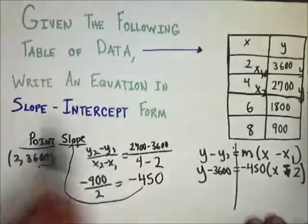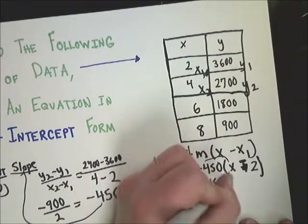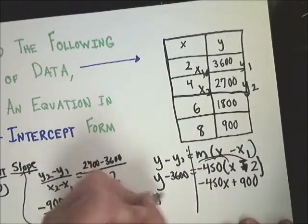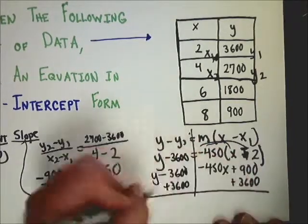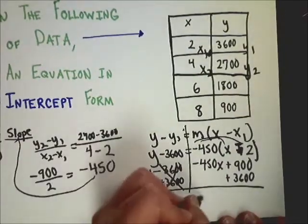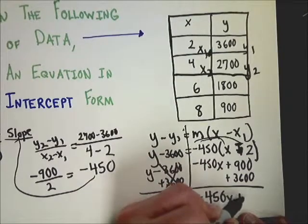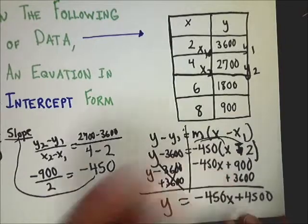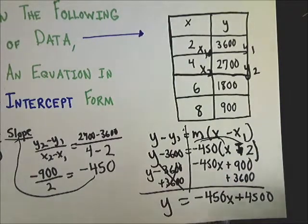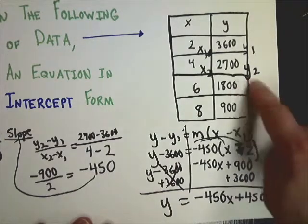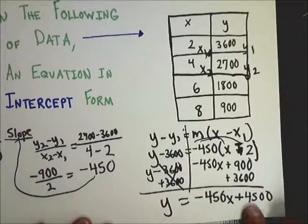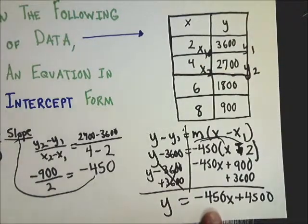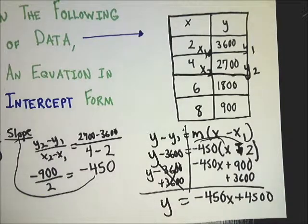To get it in slope intercept form, remember, I need to get y by itself. So I'm going to do the distributive property. Still not done, because y is still not by itself. So I need to add 3,600. That cancels, y equals negative 450x plus 4,500. And that's all you really need to do. And it kind of matches what the graph says. You'll notice that this keeps going up by 900 each time. So 0, which would be the point that this would represent, or the intercept would represent, would be 900 more, which is 4,500. And it keeps going down every 2, goes down 900, half of that is 450. So really simple way to do point-slope form. Hopefully that's all the question types answered, and you won't have such trouble with your assignment.